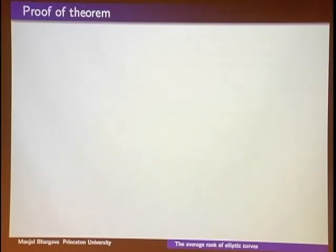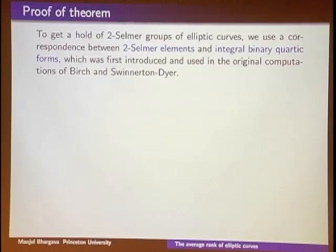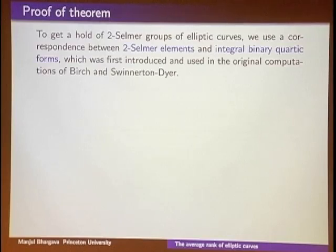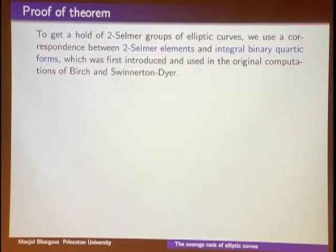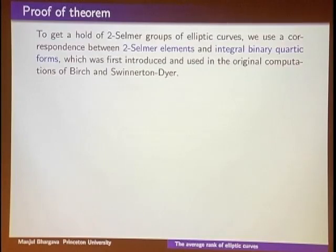The proof goes back to the origins of the BSD conjecture. To understand the 2-Selmer group, we use a correspondence — from the original BSD computations — between 2-Selmer elements and integral binary quartic forms (homogeneous degree-4 polynomials in two variables). There's an injective map from elements of the 2-Selmer group of E(a,b) to GL₂(ℤ)-orbits of integral binary quartic forms whose invariants i and j are essentially a and b. This was introduced and used in the original BSD computations.